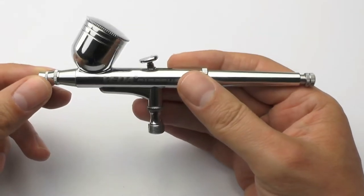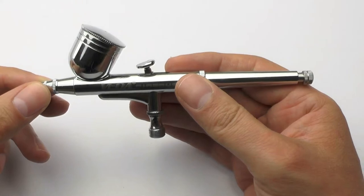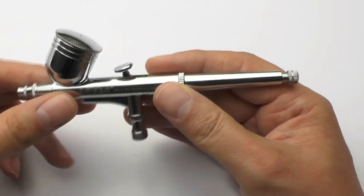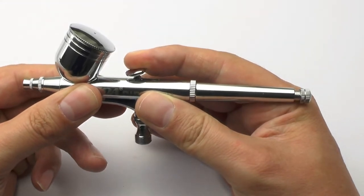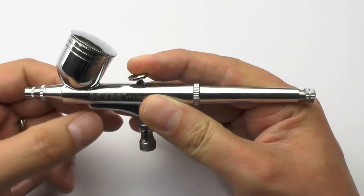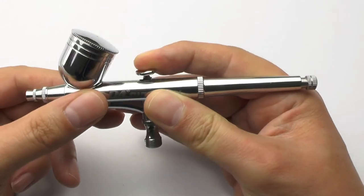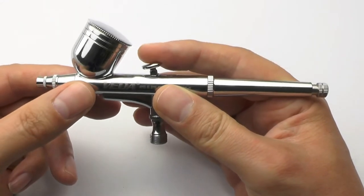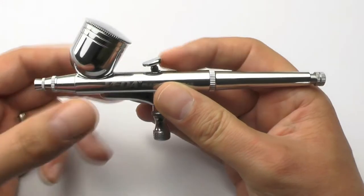This is the basic airbrush that we sell. It's the Veda 130. It's a dual action airbrush, which means you've got a push down action which will release the air and only the air, and then when you pull back that's where you get your paint release. So that is the dual action push down pull back on this particular model.